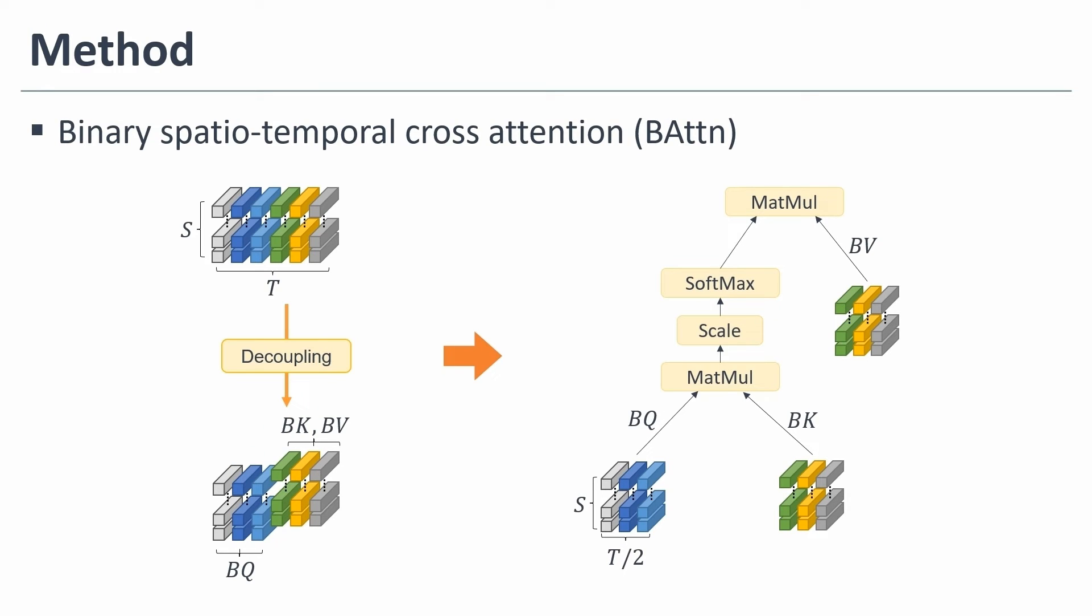Unlike zigzag attention, binary attention splits tokens in the middle for decoupling tokens. Since attention is applied on half of the tokens, time complexity is reduced, while being able to learn the relationship between big changes in actions.